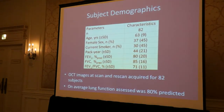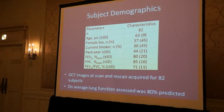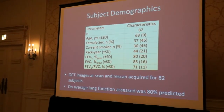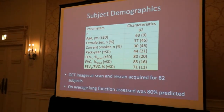Overall, I had 82 subjects as part of my study — 30 of which were current smokers, 25 were ex-smokers, and 7 had never smoked. On average, we had a lung function set that was 80% predicted.